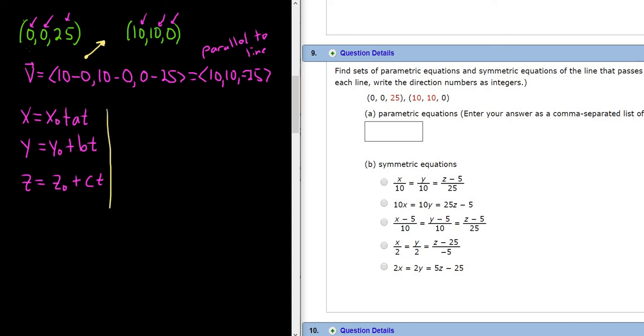So now we can plug everything in. Let's go ahead and use the first point as our x naught, y naught, z naught. It doesn't matter which one you use. So x will be equal to 0. So this goes away. And this is our a. So 10t. This is our a, b, c. This is called our direction vector. And a, b, and c are called direction numbers.